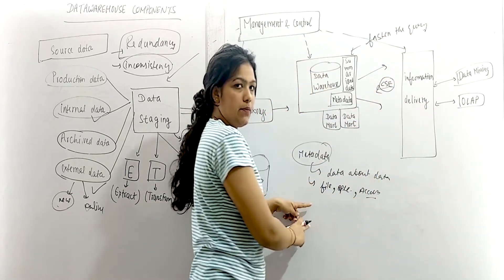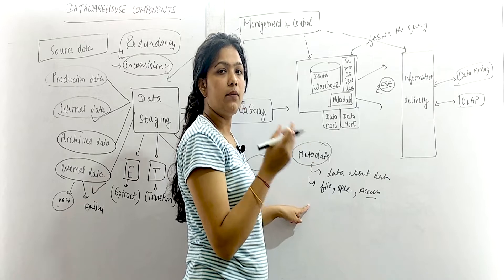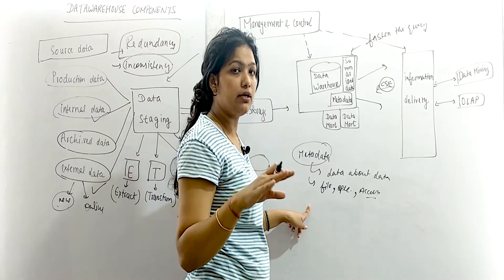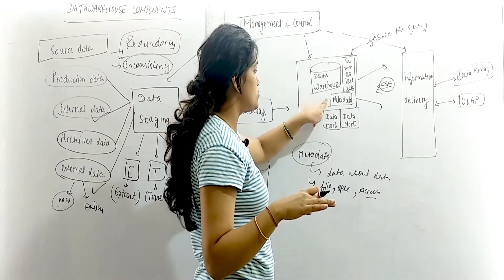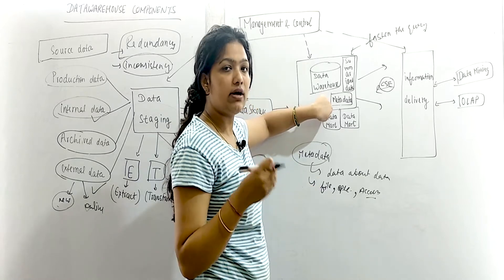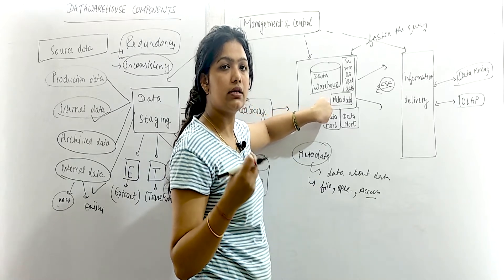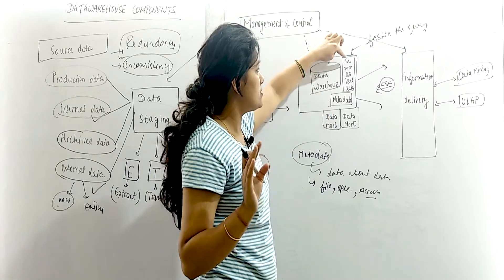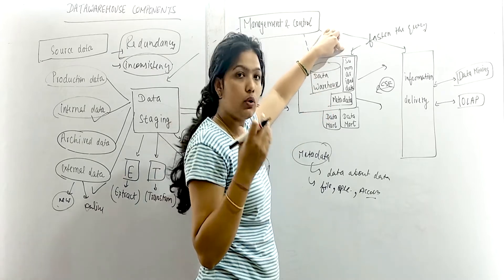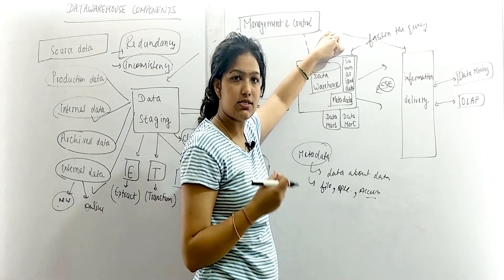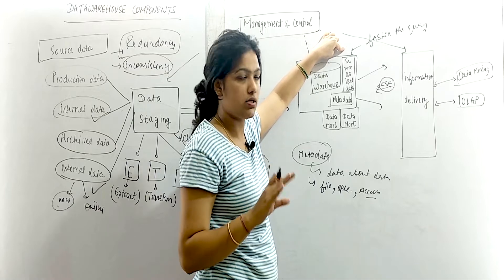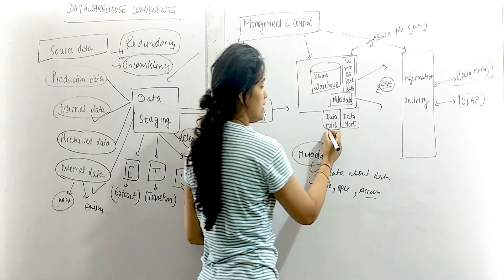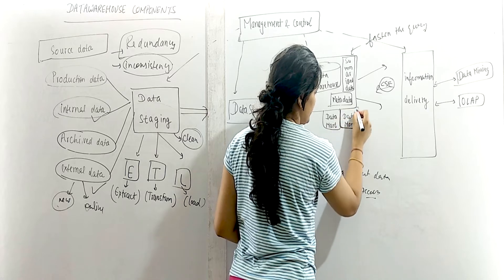So metadata — data about all files, their specifications, location, and security methods — is one way to speed up queries so you can get results as fast as possible. Summarized data uses sub-keywords to make the search faster. Both metadata and summarized data are used to fasten the query.